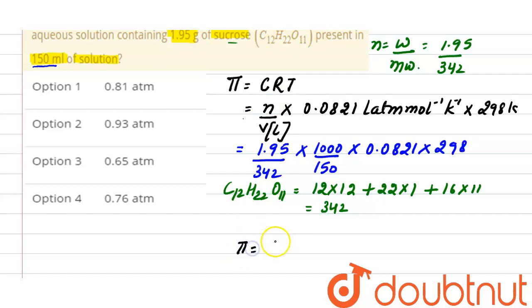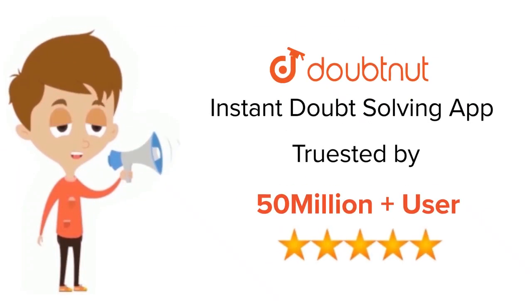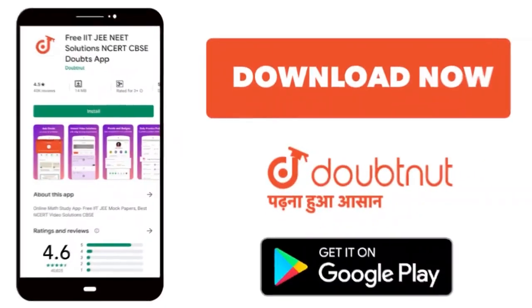osmotic pressure is 0.81 atmospheric and the correct option here is option 1. For class 6 to 12, IIT-JEE and NEET level, trusted by more than 5 crore students, download Doubtnet today.